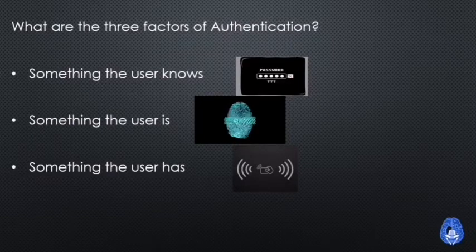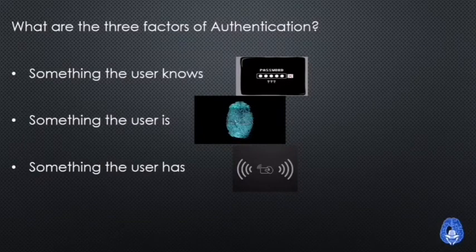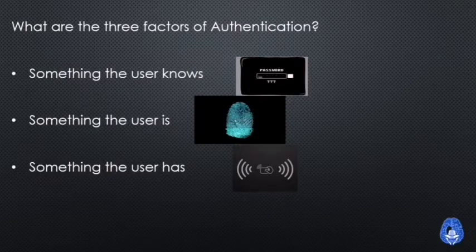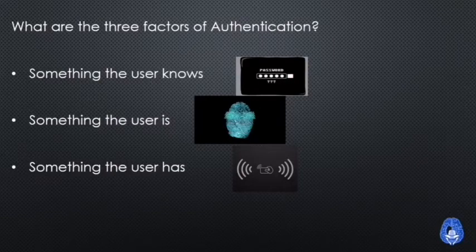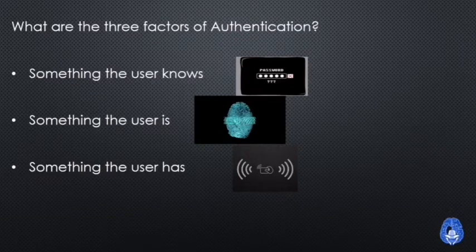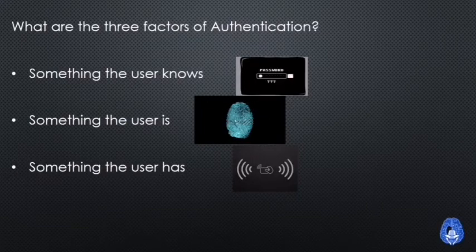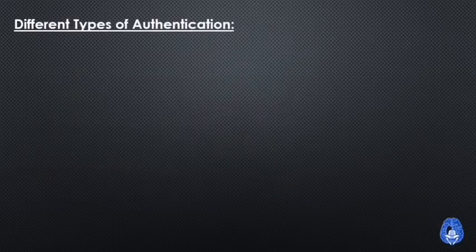Another example of something the user has is a USB device token — you manually create a USB device and only after inserting it into the computer can you access it. This creates two authentication factors: the USB device must be present and the password must be known. Even if someone knows your password, without the USB device they won't be able to access your account — an extra layer of security.